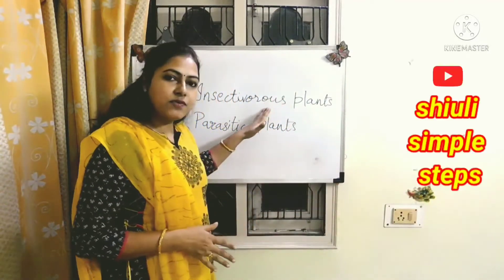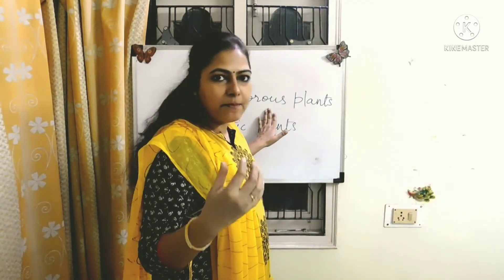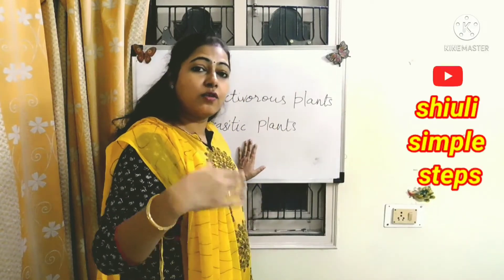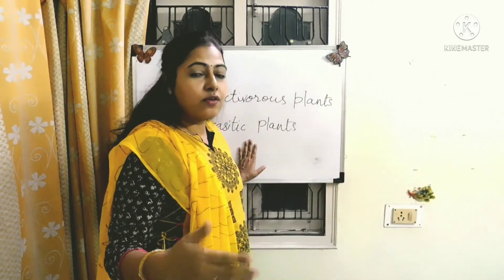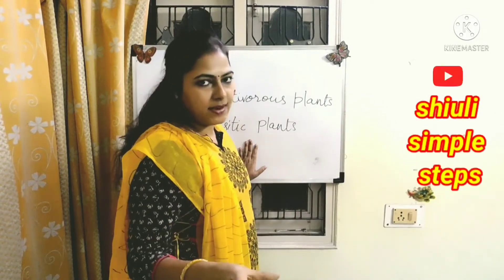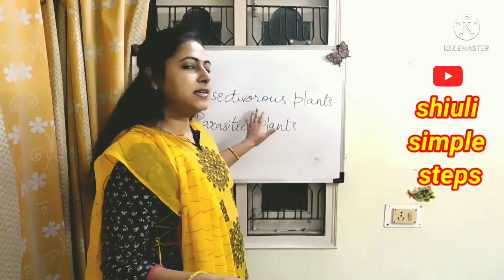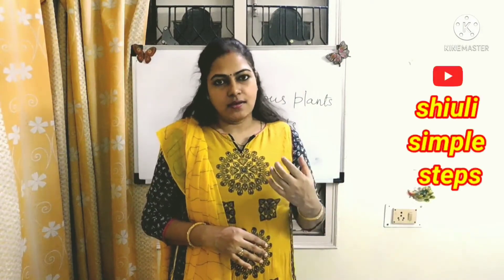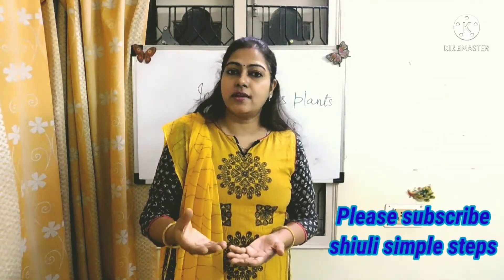So here we completed our topic. Insectivorous plants trap insects and take them as food. Parasitic plants grow on some other plants and they take nutrition and food from the main plant.